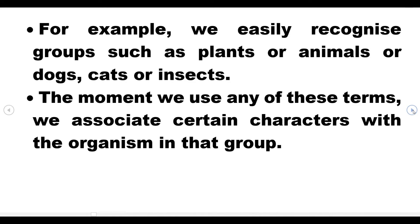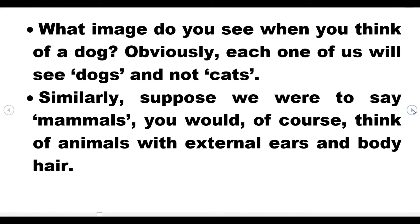For example, easily recognized groups such as plants, animals, dogs, cats, and insects. When we say plants, we associate characters like green, photosynthetic organisms. When we talk about animals, we think of their common characters. Similarly, when we say mammals, we think of animals with external ears, body hair, and mammary glands — these characters come to our mind immediately.